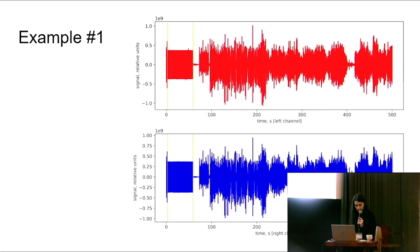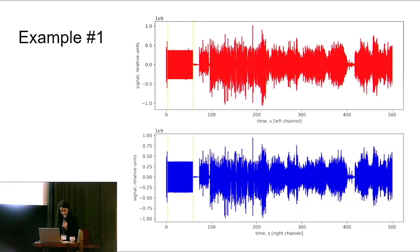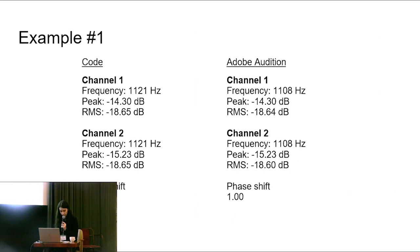And so here's an example of a successful tone detection. This is what the plots look like. And the yellow bars indicate where my code detected the boundaries of a tone. And these are the values my code produced compared to the values you would get from Adobe Audition. As you can see, they're essentially the same.